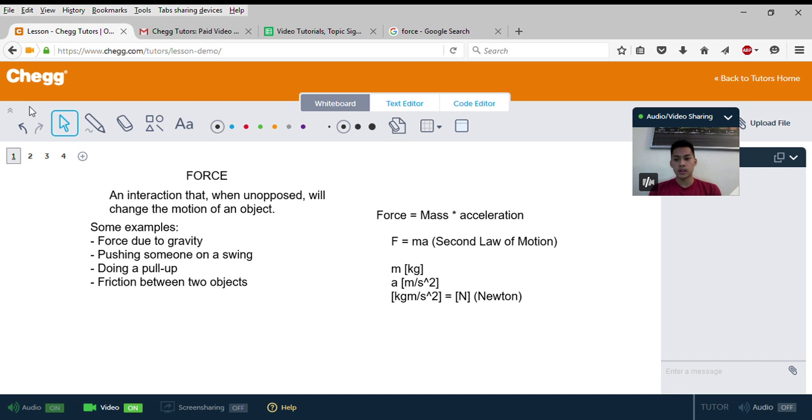The general equation for force, which is the second law of motion, is force equals mass times acceleration, or simply F = ma. We have m equals the mass, with the unit being kilograms.